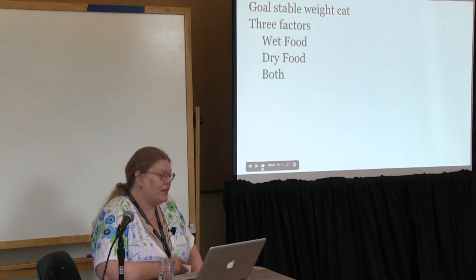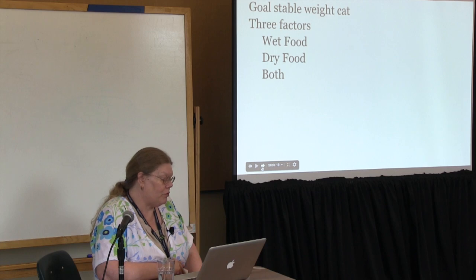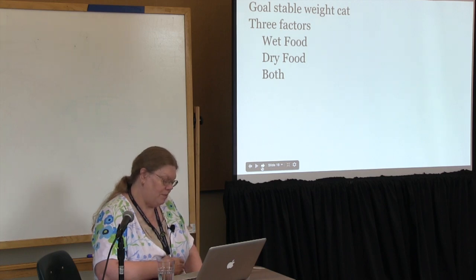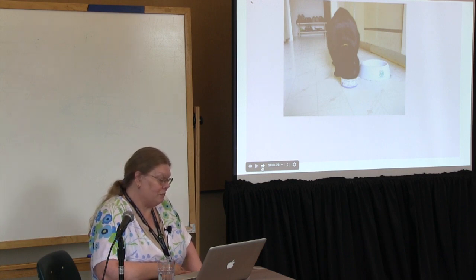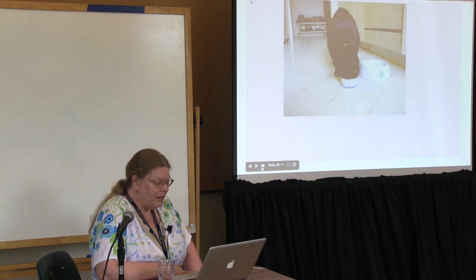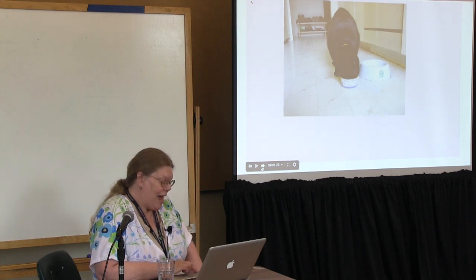The cat feeding experiment. The goal is a stable weight cat. I have three factors that I'm going to measure: wet food, dry food, and both. I'm going to keep the environment the same — same spot, same time of day, same amount in calories of each type of food. Measure it over time, weigh the cat weekly, and see which one gives me a stable weight for my cat.